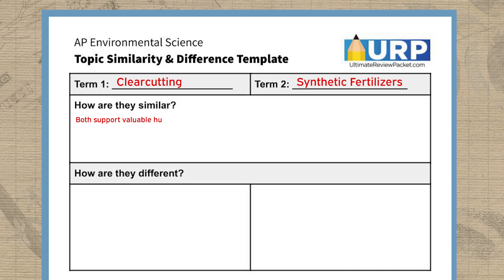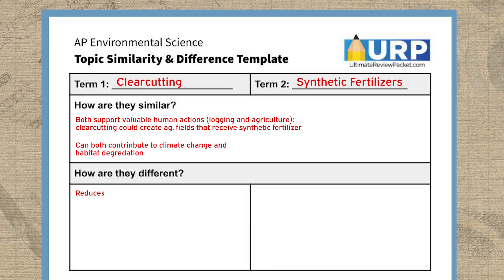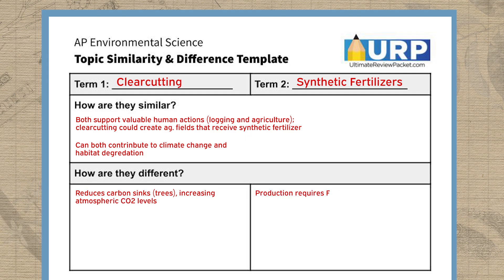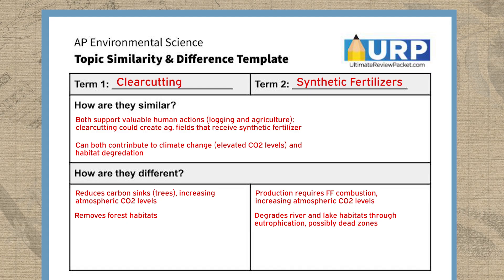Let's try this with two random vocab terms from Unit 5: clear cutting and synthetic fertilizers. They both support valuable human actions like logging and farming — clear cutting could be used to clear land for farming, which might then involve using synthetic fertilizers on the crops planted in place of those trees. They can also both contribute to climate change and habitat degradation, but in different ways. Clear cutting reduces carbon sinks, leaving more carbon in the atmosphere, while producing synthetic fertilizers requires burning fossil fuels, actively adding more carbon. As for habitats, clear cutting directly removes forest habitats, while synthetic fertilizers can wash off into nearby rivers or lakes via runoff and cause eutrophication, which can eventually create a dead zone in that habitat.